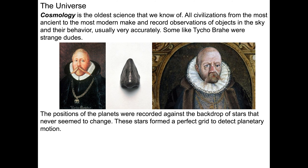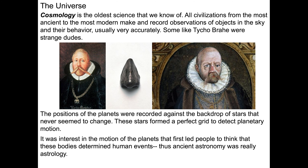Brahe was also a very good scientist. The positions of the planets were recorded against the backdrop of the stars, which formed a grid to detect planetary motion. He was exceptionally good at modeling and recording this planetary motion, developing his own instruments to do so — copies still on display in Beijing and apparently still functional. It was interest in the motion of the planets that first led people to think these bodies determine human events — essentially, ancient astronomy was more like astrology.